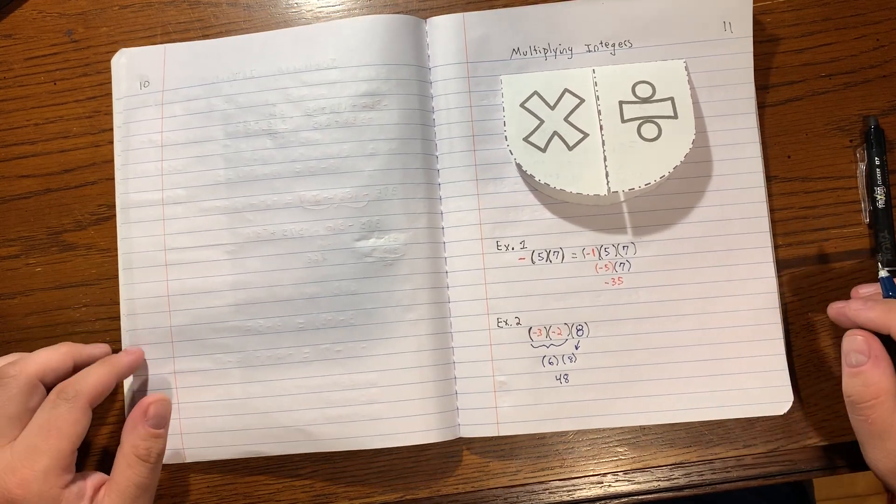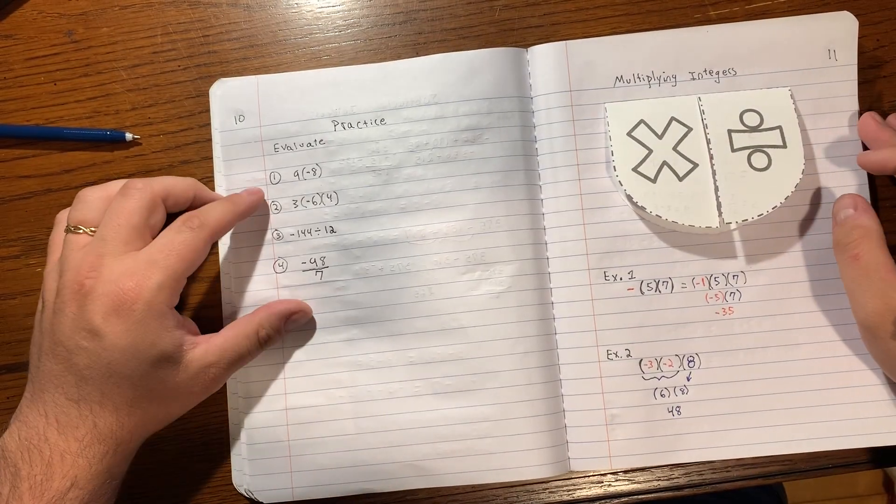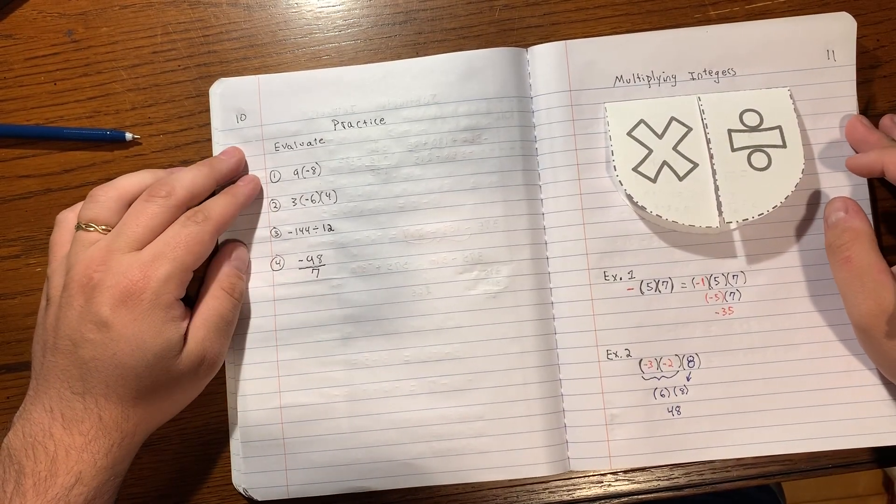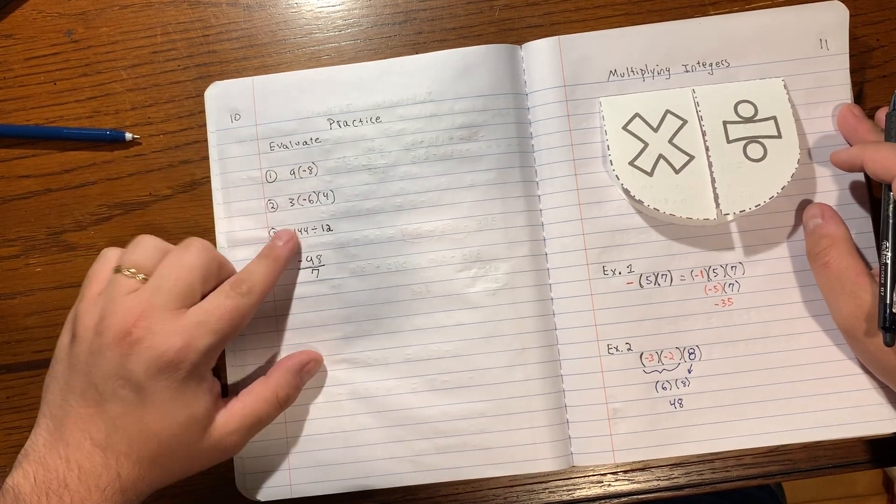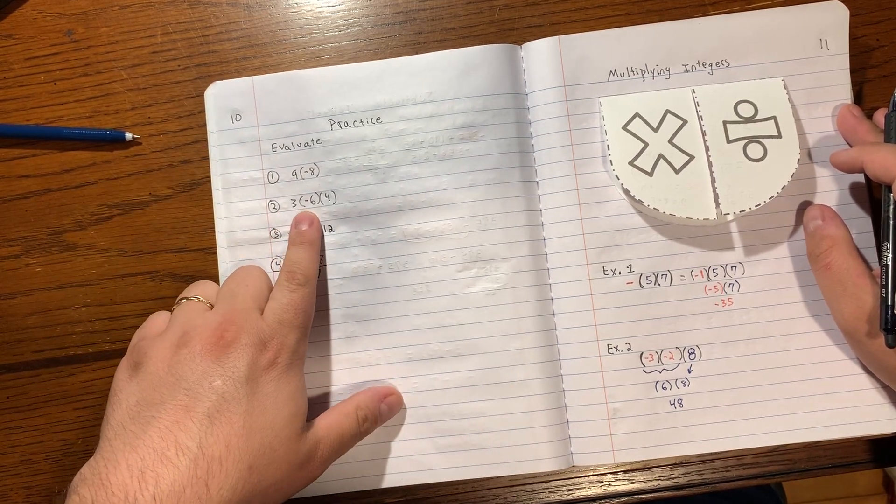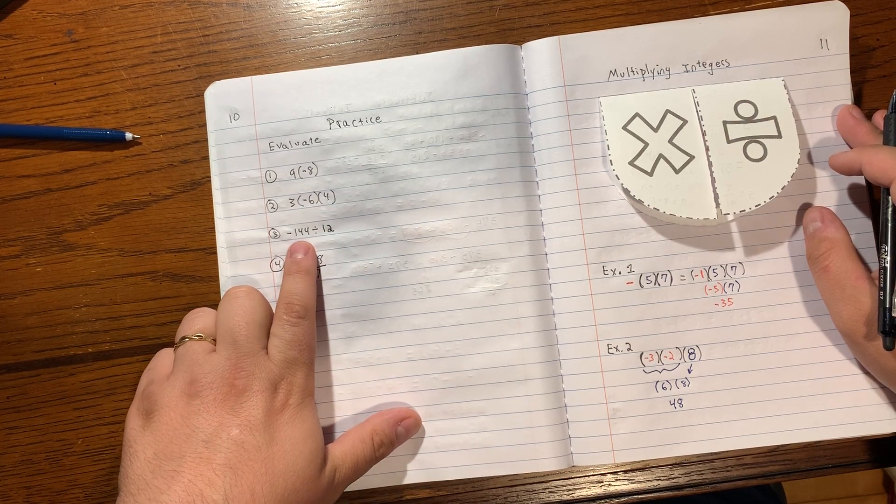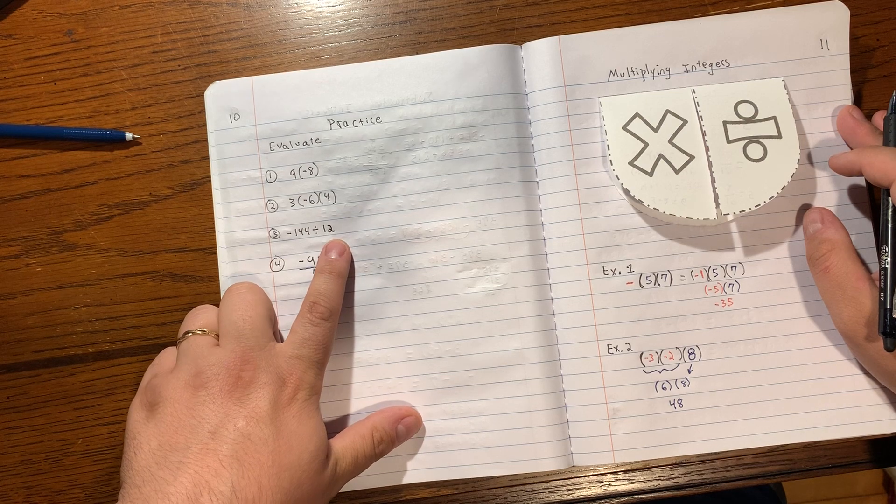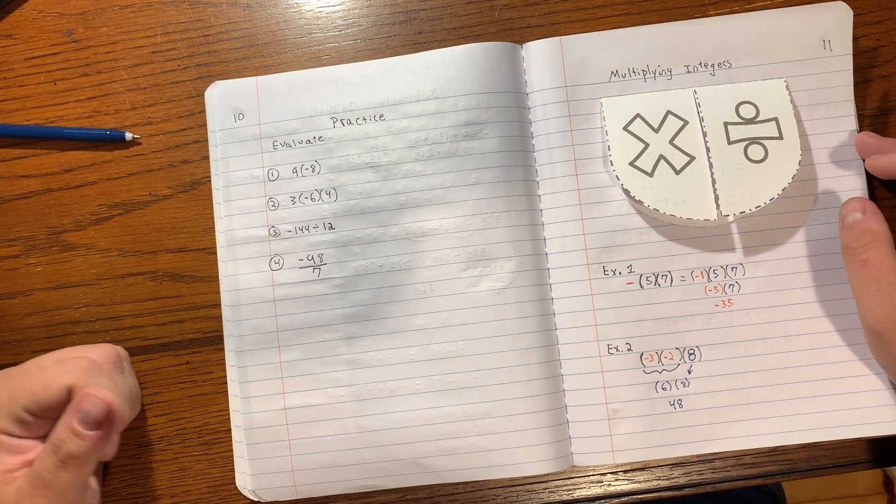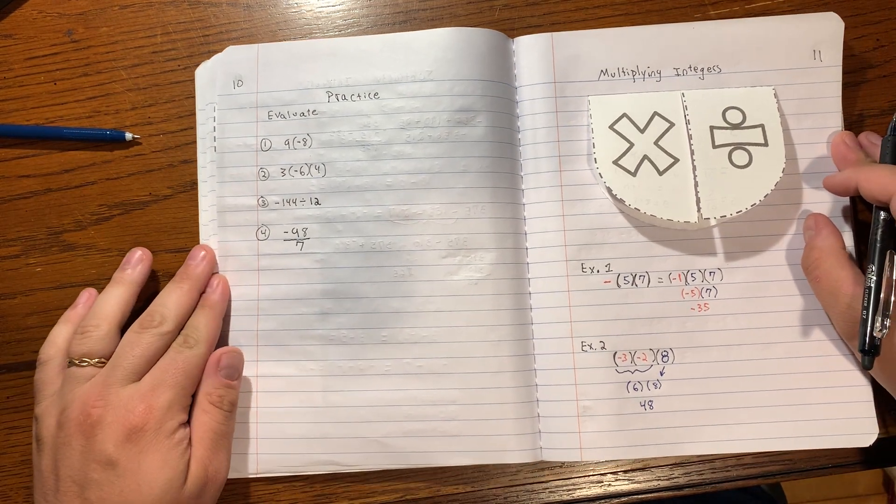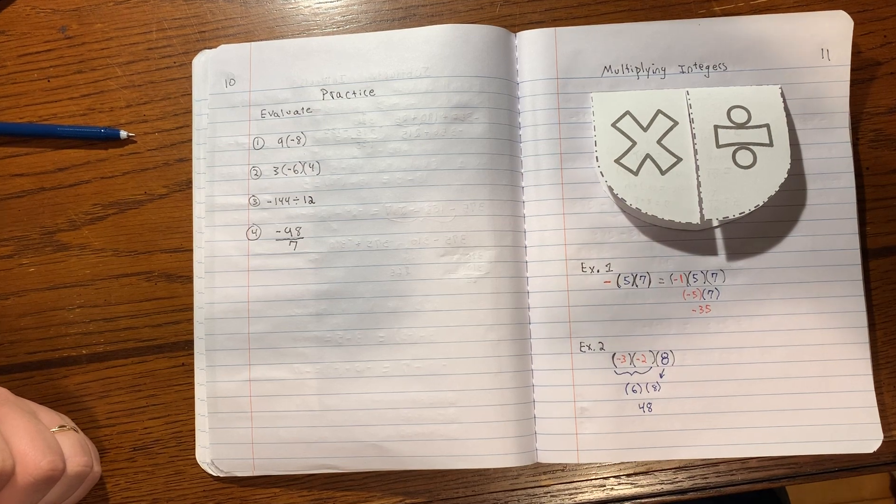On the left side of your book, you're going to do these four problems. You're evaluating nine times negative eight, three times negative six times four, negative 144 divided by 12, and negative 98 divided by seven. And when you're done, you're going to show that to your teachers so they know that you understand the material, and then you can move on to the practice problems.